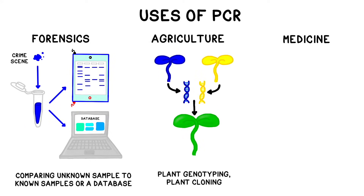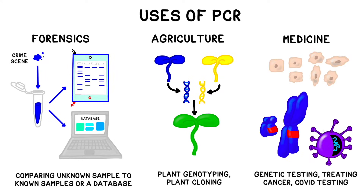In agriculture, PCR is a key part of plant genotyping for breeding so that desirable traits can be combined, or to determine if a particular plant should be cloned. In medicine, PCR is a diagnostic tool used in genetic testing, tracking cancer mutations, and of course in COVID testing.